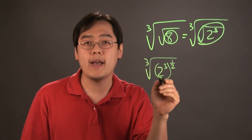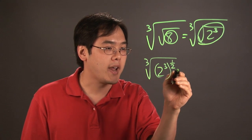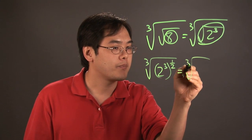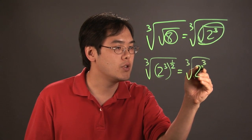Now as you might imagine from exponent rules you can multiply the three and the one-half so that'll be the cube root of 2 to the three-halves power.